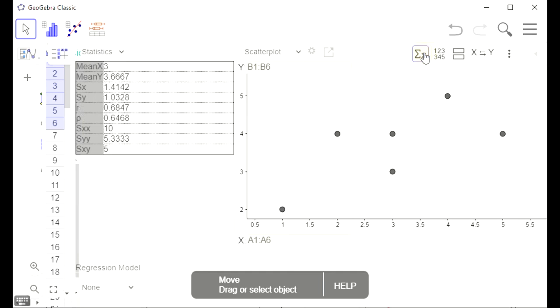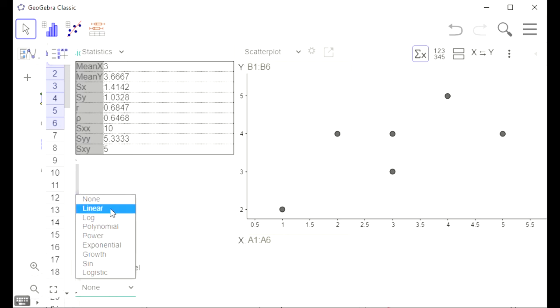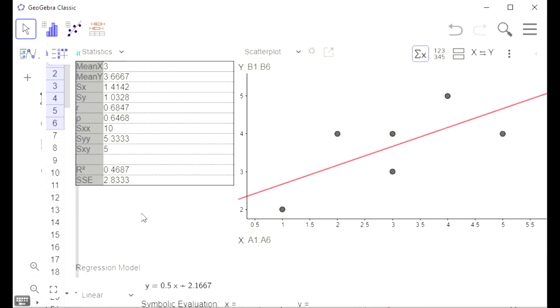By using sigma x, we can see the correlation coefficient. Then down below in this drop-down menu under regression model, we can click on linear, and that sets up the line of best fit and gives us the equation for the linear regression line.